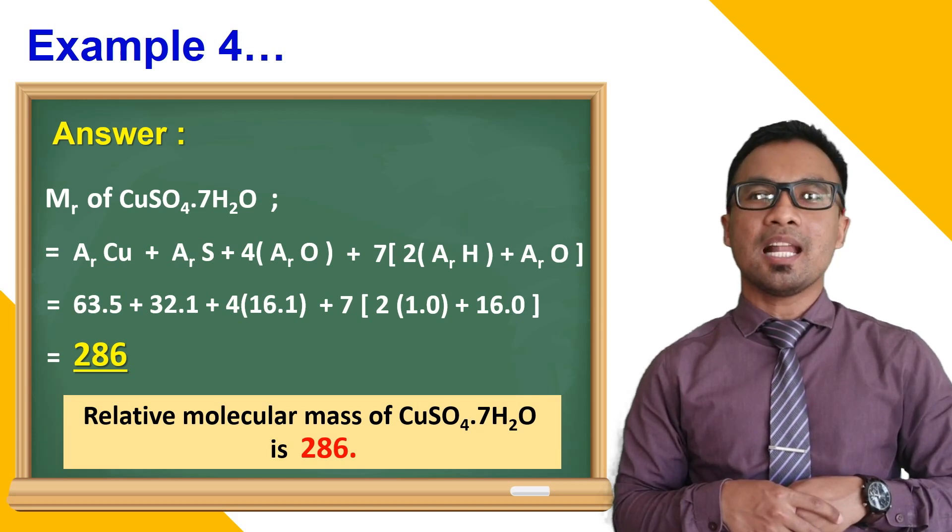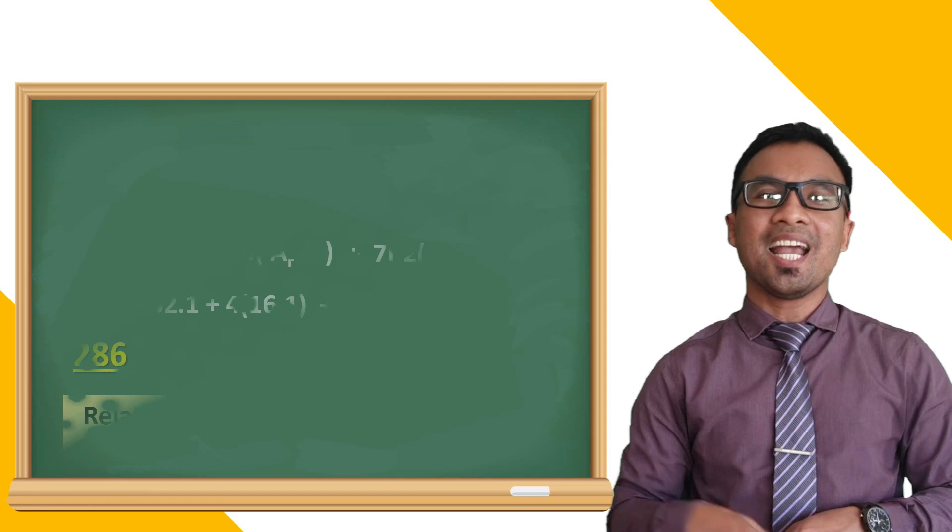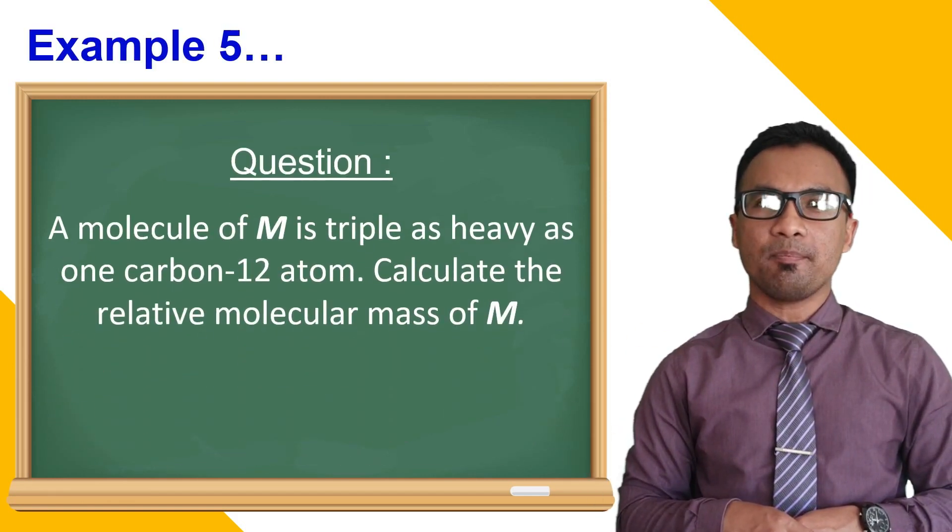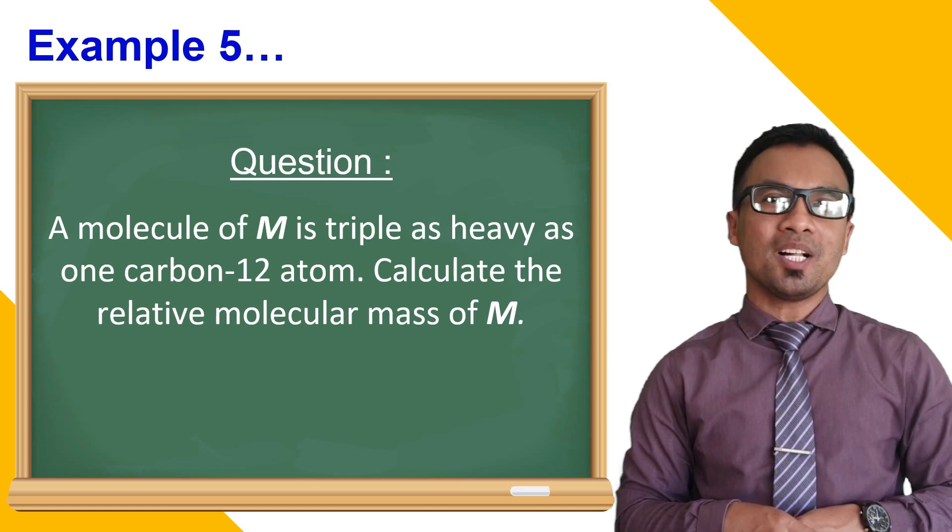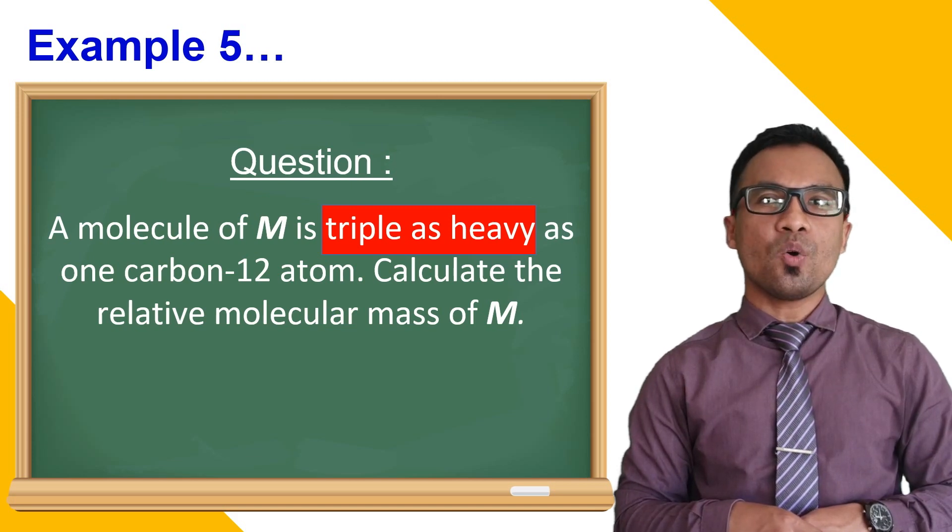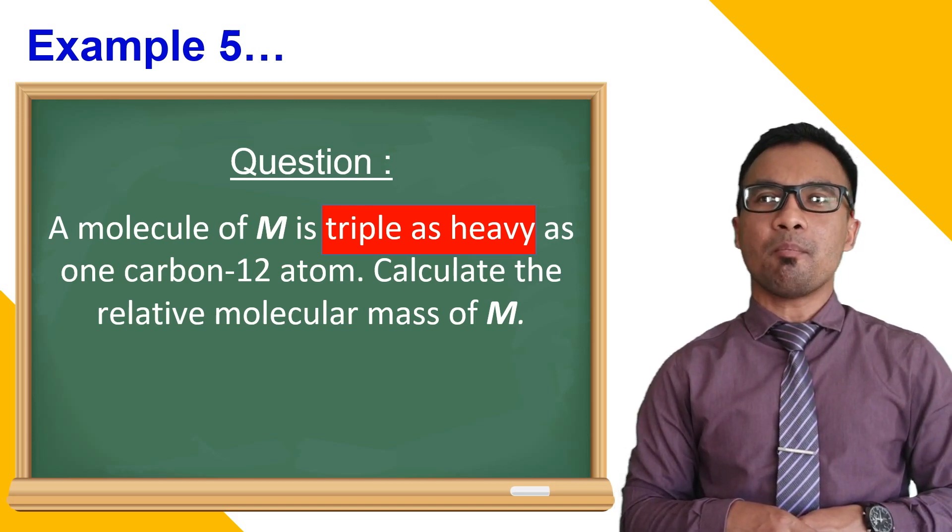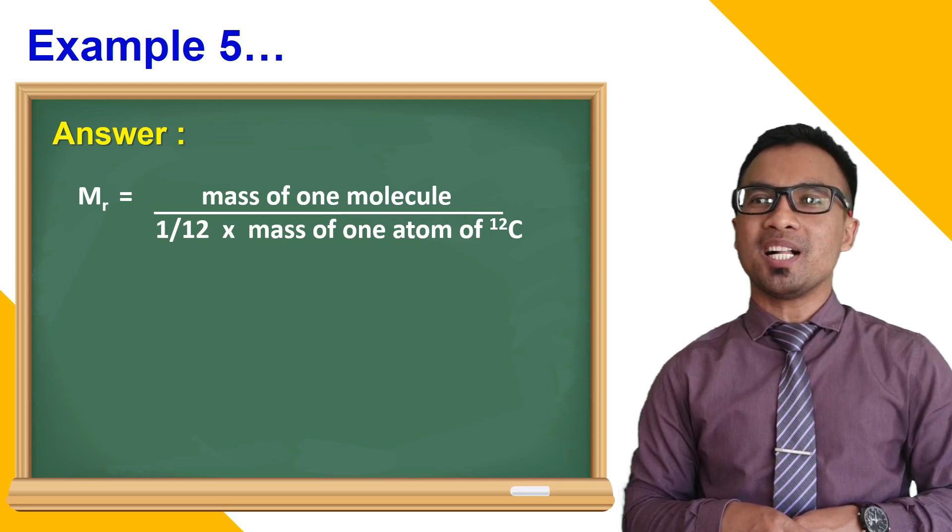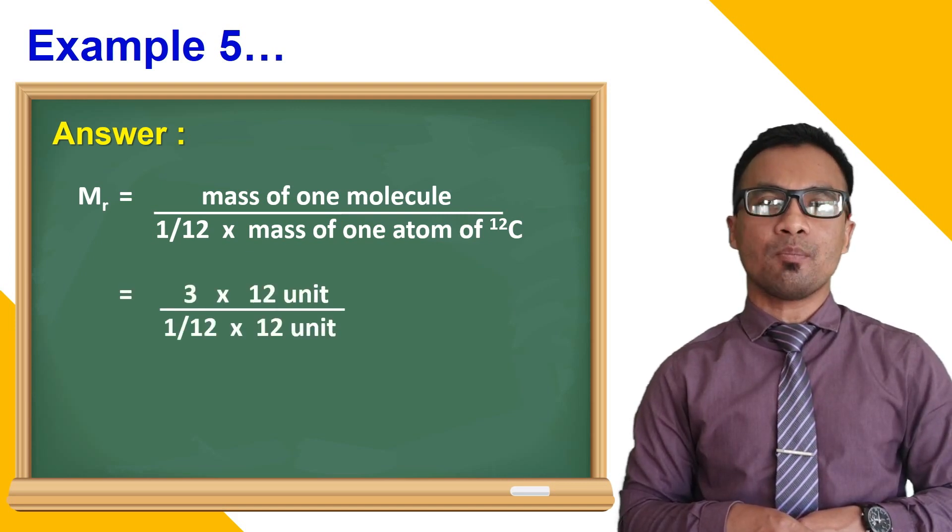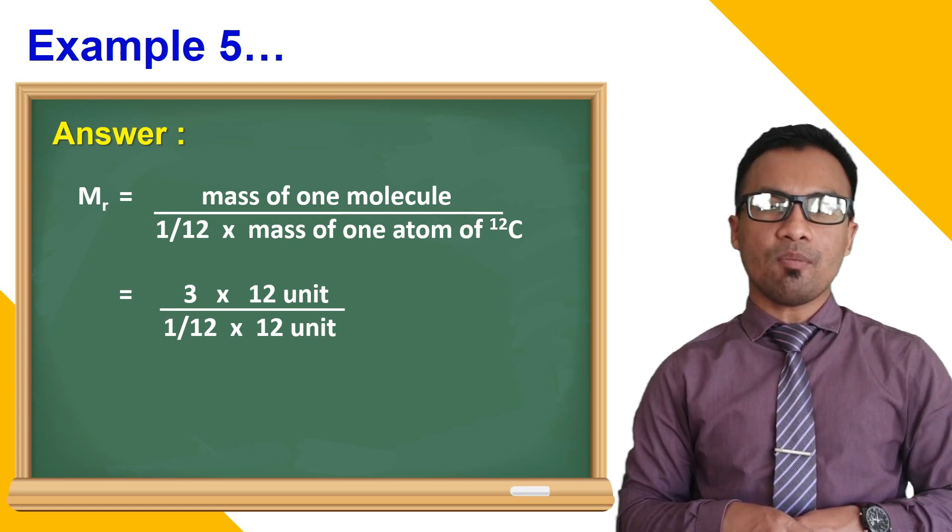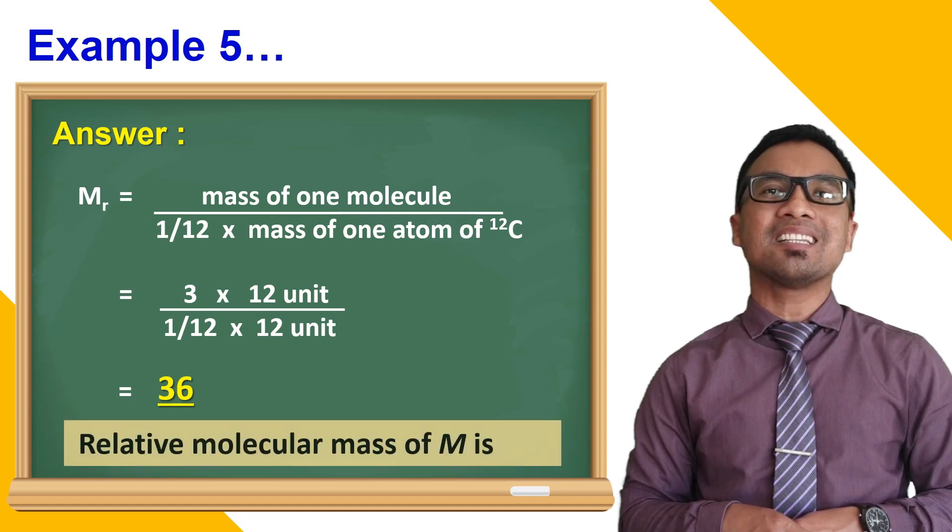Lastly, let's try another example. So, here, we need to calculate the relative molecular mass of M when M is triple as heavy as 1 carbon-12 atom. Moving on from there, we have the relative molecular mass of M to be 36.